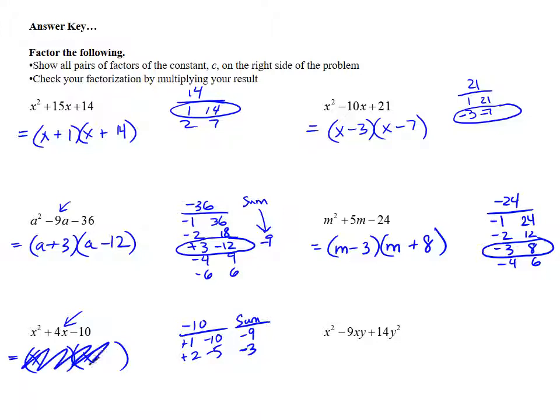So it turns out there are no two factors of negative 10 that will make a 4. So this polynomial is actually what we would call prime. It does not factor. So every once in a while, you're going to see a polynomial that doesn't factor. Here's an example of one.